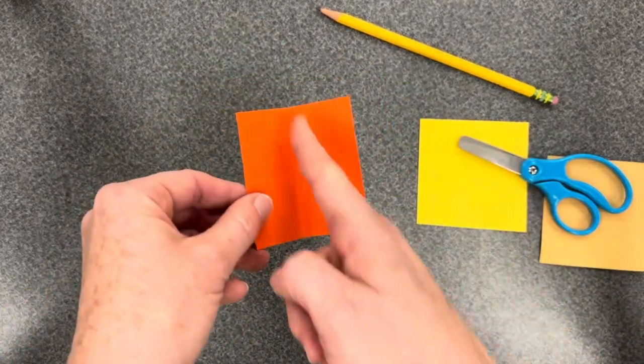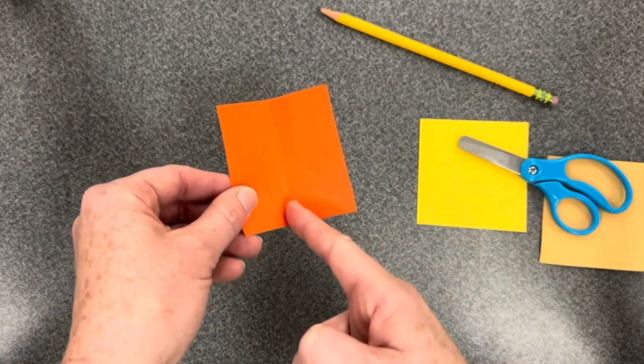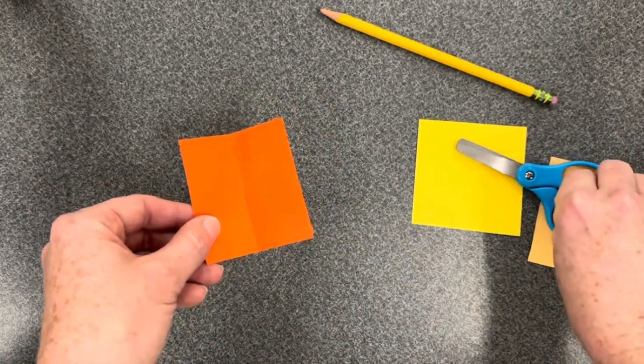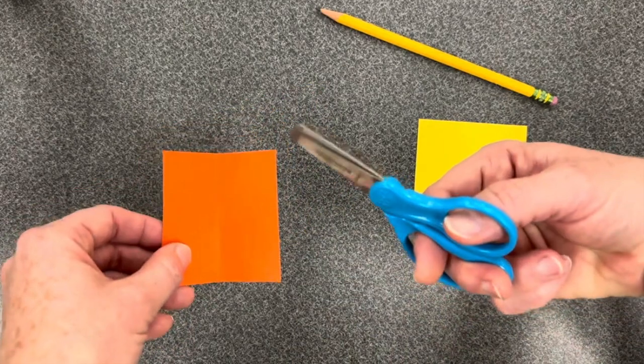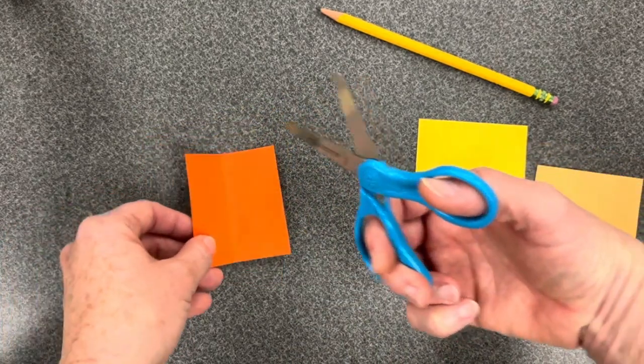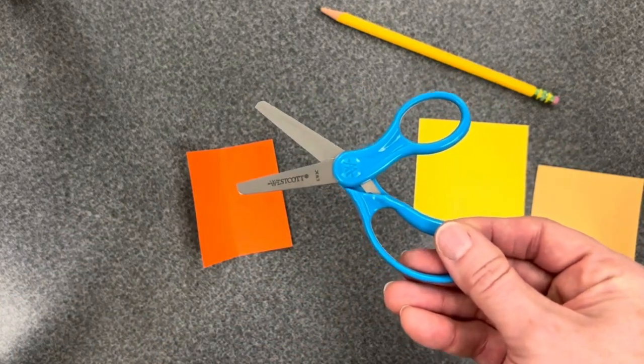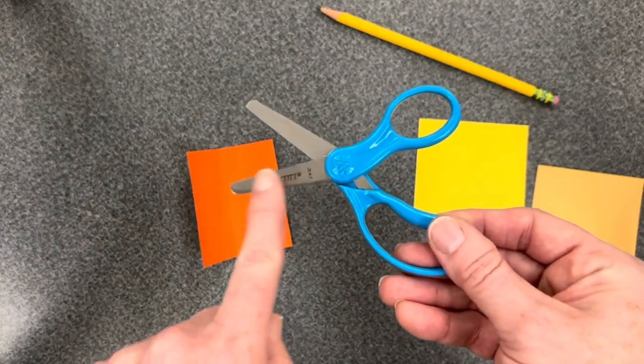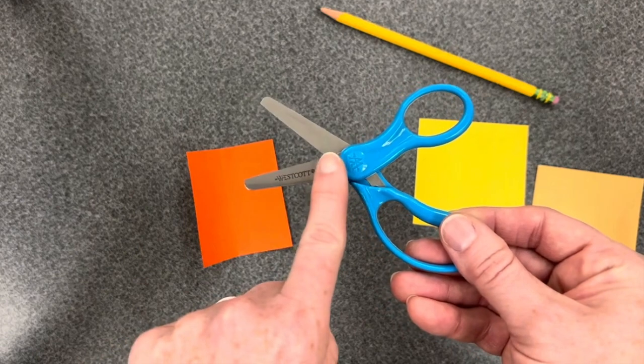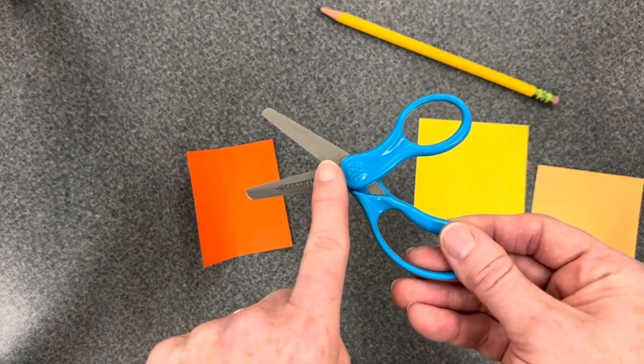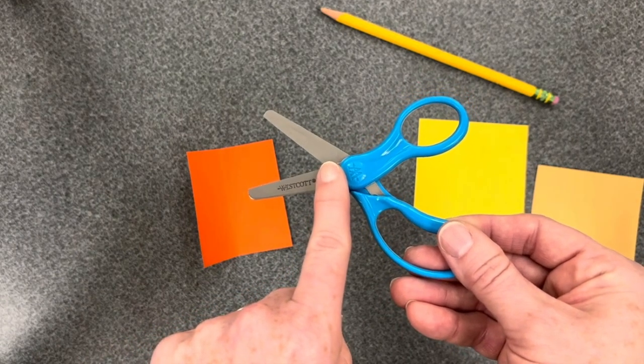You will use your scissors to cut right along this fold. When using scissors, make sure that you open them all the way up. The mouth of the monster is the strongest when you feed the paper all the way to the back of the jaw.